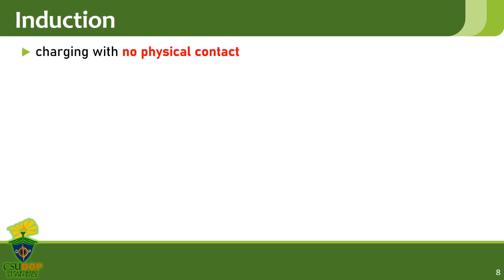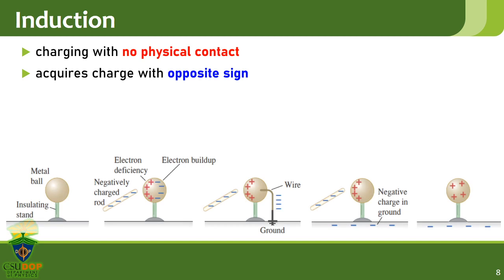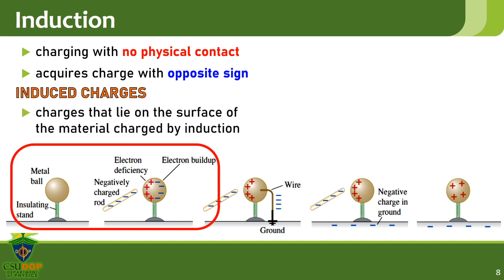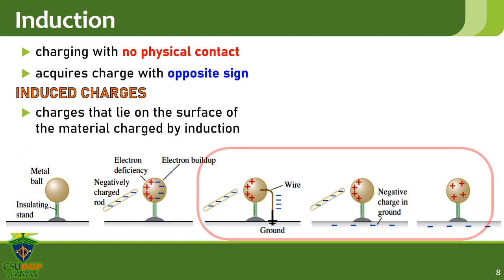The last charging process is by induction. This is charging with no physical contact, in contrast with rubbing and conduction. In this process, the object acquires charge with the opposite sign. Suppose you have a metal ball, and you place a negatively charged rod close to it. Since negative charges attract positive charges, there will be a buildup of positively charged atoms near the rod and negatively charged atoms on the opposite side of the ball. These buildup of charges are called induced charges, and they lie only on the surface of the material. To complete the process of charging by induction, the metal ball is grounded so that only positive charges will remain.